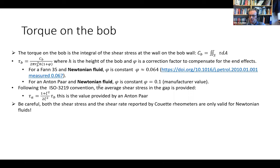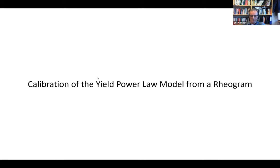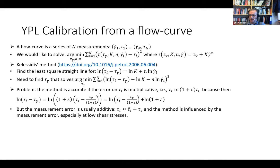That's where things go wrong, because our fluids are not Newtonian. Before going to the corrections, I want to talk about calibrating the yield power law model to a rheogram. A flow curve or rheogram consists of n measurements of wall shear stress and wall shear rate. What we want to do is minimize the sum of squared differences between the model — tau_y plus k times gamma-dot to the power n — and the measured shear stress values.